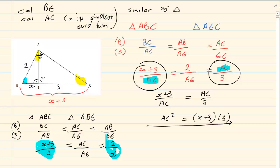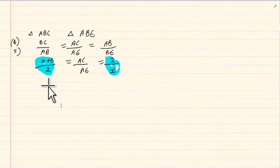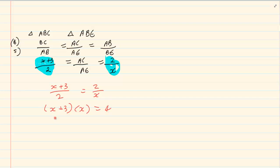We can solve for X because we have a ratio and we can use cross multiplication. Now by cross multiplication we are going to say X plus 3 all over 2 is equal to 2 over X. If we cross multiply we are going to have X plus 3 into X is equal to 2 times 2 which is 4. We have X squared plus 3X. Bring the 4 over. It's minus 4 is equal to 0. This is a trinomial quadratic equation.